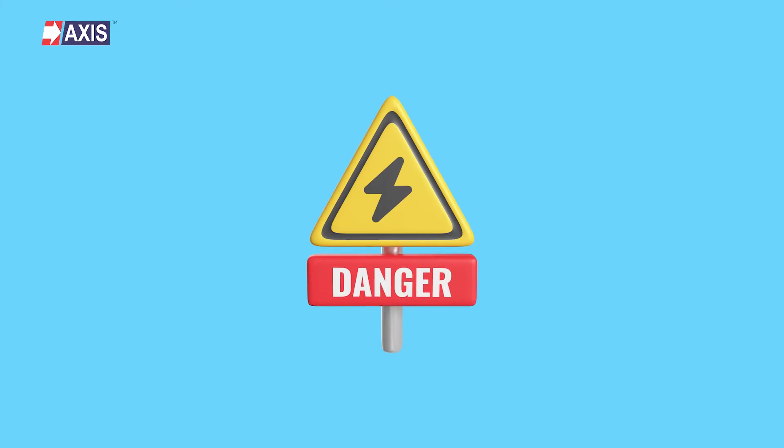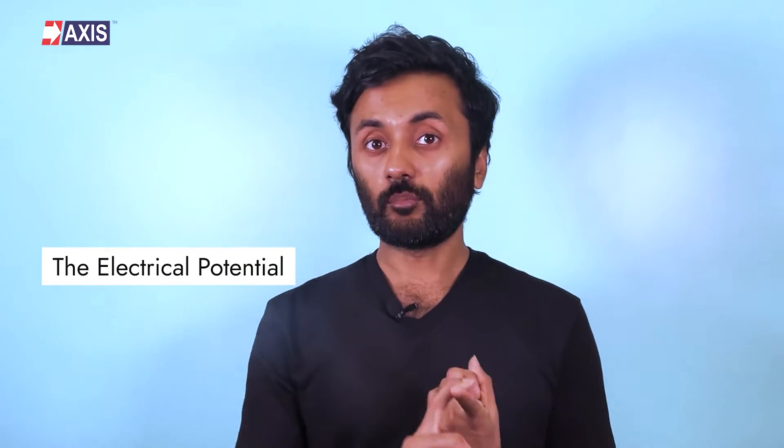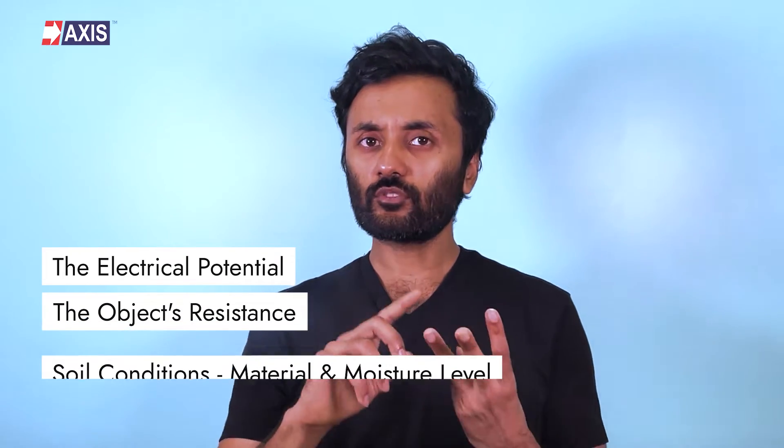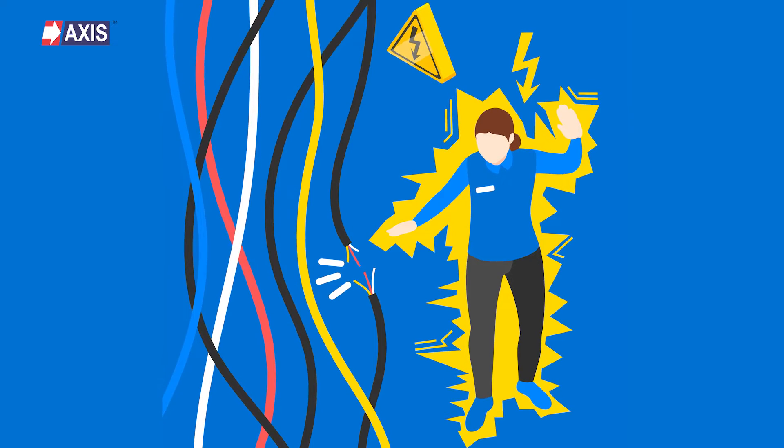So what happens if an energized wire falls onto a chain-link fence or directly into the ground? The object and its surrounding area will become electrically charged, creating a high voltage zone. However, the actual voltage level depends on a lot of factors such as the electrical potential, the object's resistance, and soil conditions including material and moisture levels. If a person or animal accidentally comes into contact with this high voltage zone, the result could be fatal or cause severe injuries.